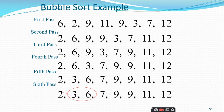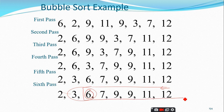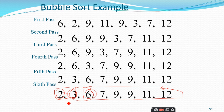After the sixth pass you can observe that the sixth largest element is in its correct position and the entire array is sorted. In the sixth pass no swapping was performed — this means all elements are already in sorted order. There is no need to go for a seventh pass. Whenever you find an iteration with no swap operations, you terminate the program. This is done to increase the efficiency of the bubble sort algorithm.